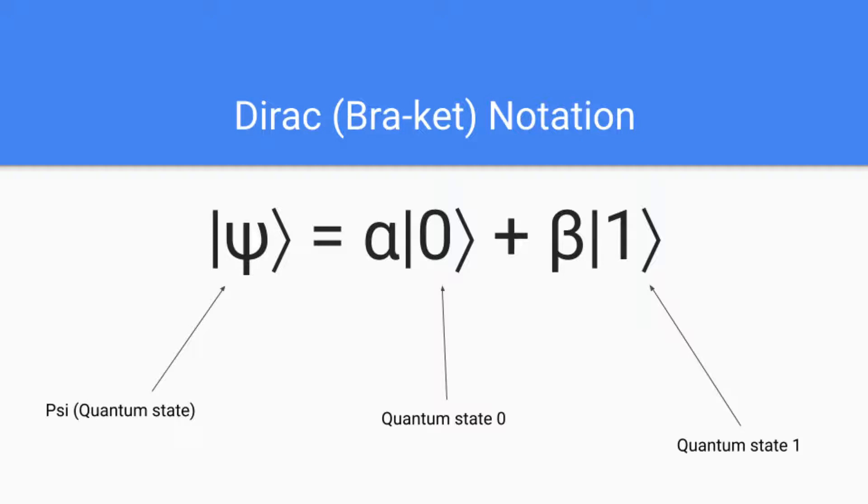So here we have quantum state psi equals alpha times quantum state zero or ket zero plus beta times ket one. Basically, your quantum state for a single qubit will be the probability of landing in state zero plus the probability of landing in state one.